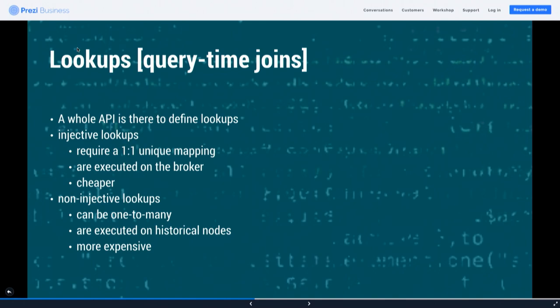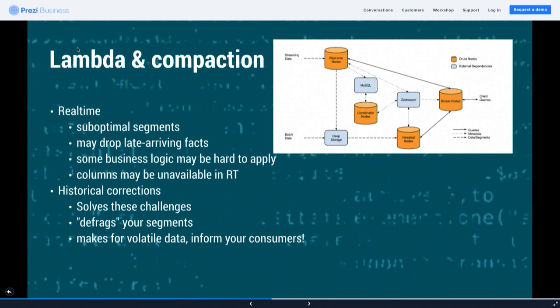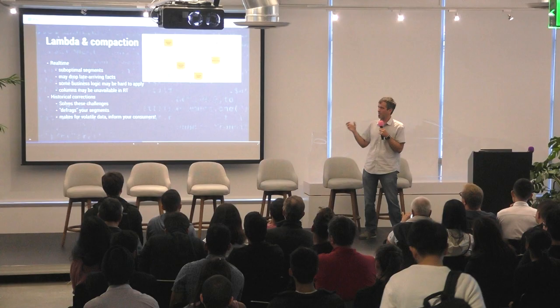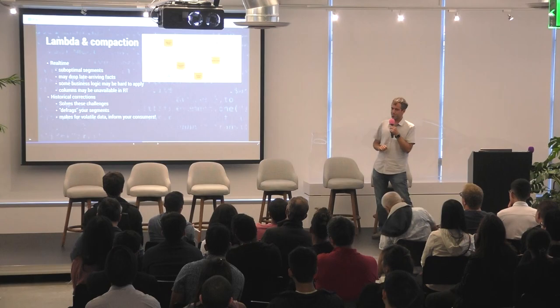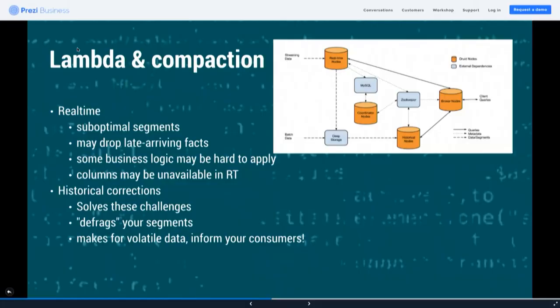Now: lambda architecture and compaction. In the Druid architecture, real-time nodes constantly receive a stream of data in a write-optimized store. They answer queries at the same time and periodically flush data — taking a segment, publishing it to deep storage, and notifying the coordinator. The problem is real-time nodes don't do a great job creating segments: there are many of them and the segments they write tend to be smaller than optimal and more fragmented.